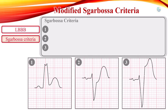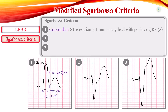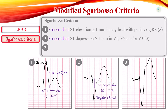The first criterion is concordant ST segment elevation of at least 1 mm in any lead with a positive QRS complex, which scores 5 points. The second criterion is concordant ST depression of at least 1 mm in leads V1, V2, or V3, which scores 3 points.